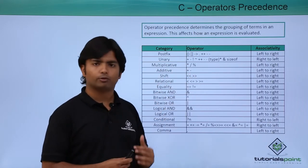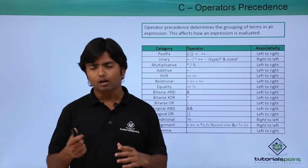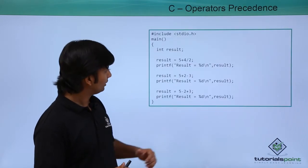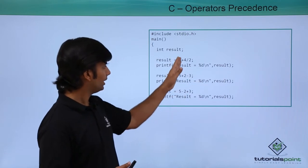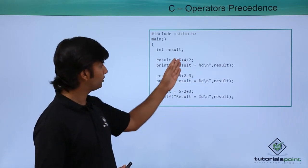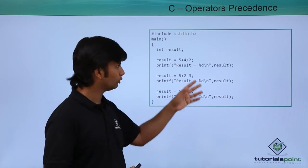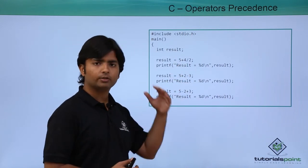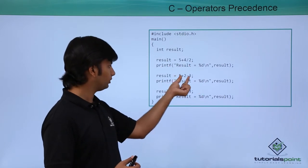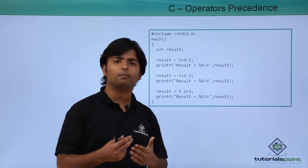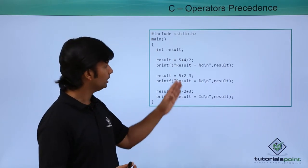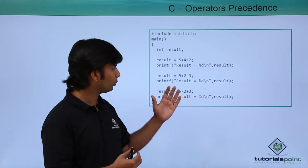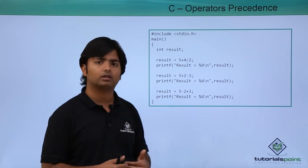This is the complete precedence table for working with operators. If you get any complex expression, you can use this table to calculate the exact value. For example, with the expression 5 + 4/2, since division has greater precedence than addition, 4 will be divided by 2 first giving 2, and then 2 is added to 5. For 5+2-3, since plus and minus have the same precedence, associativity is followed.